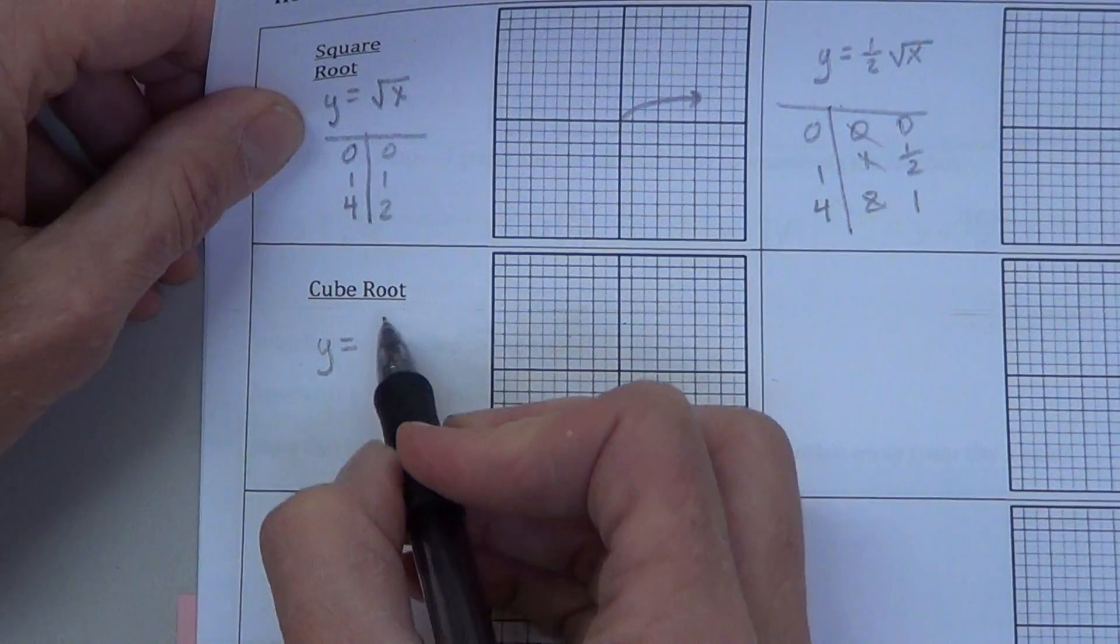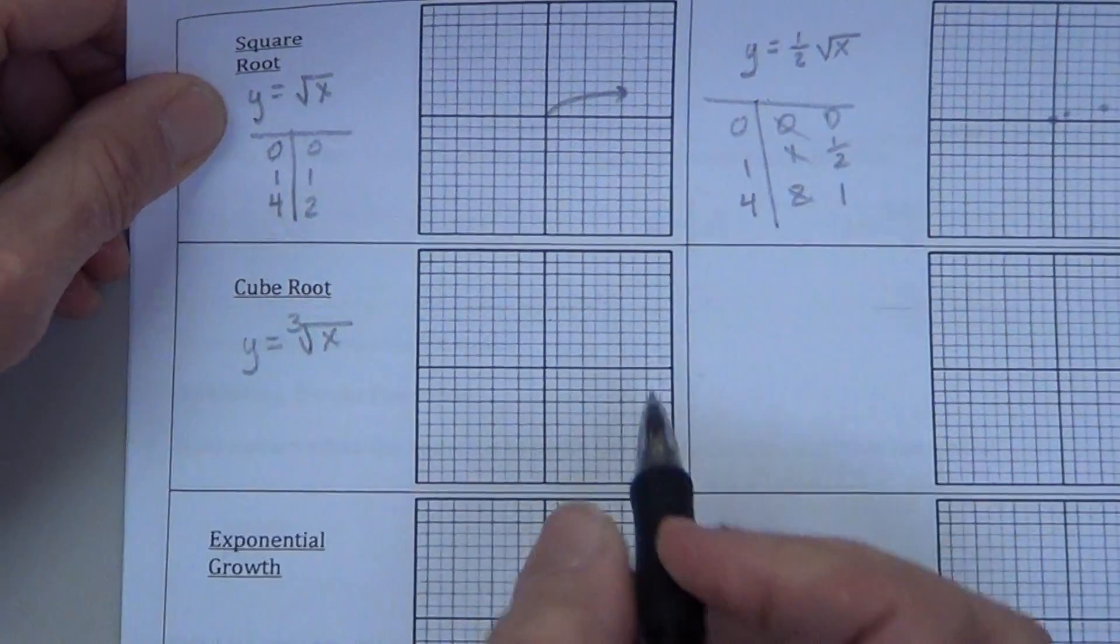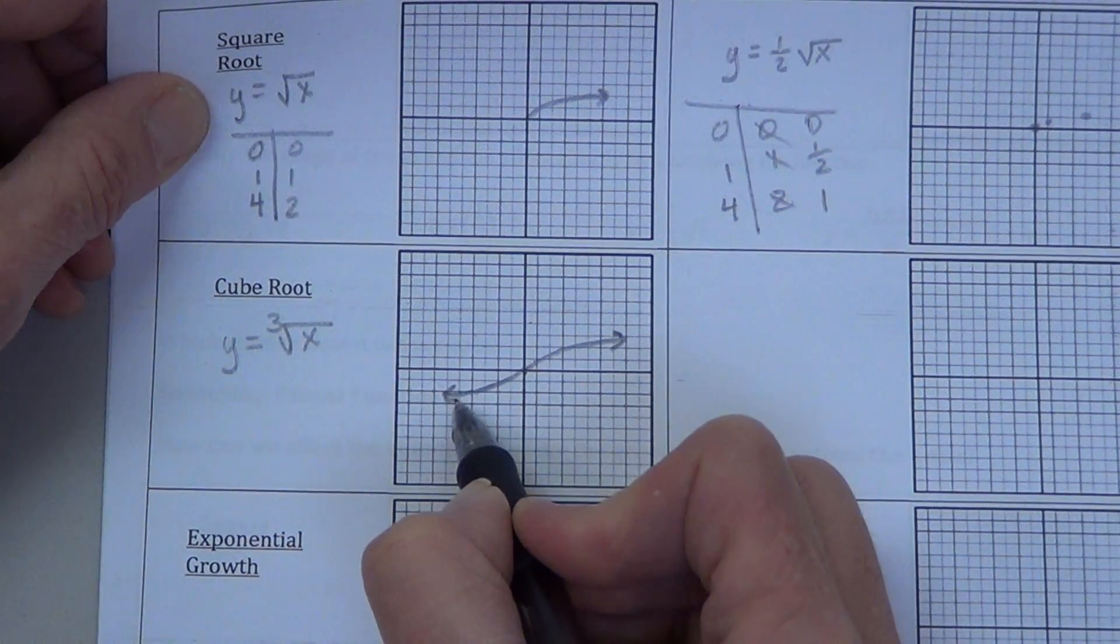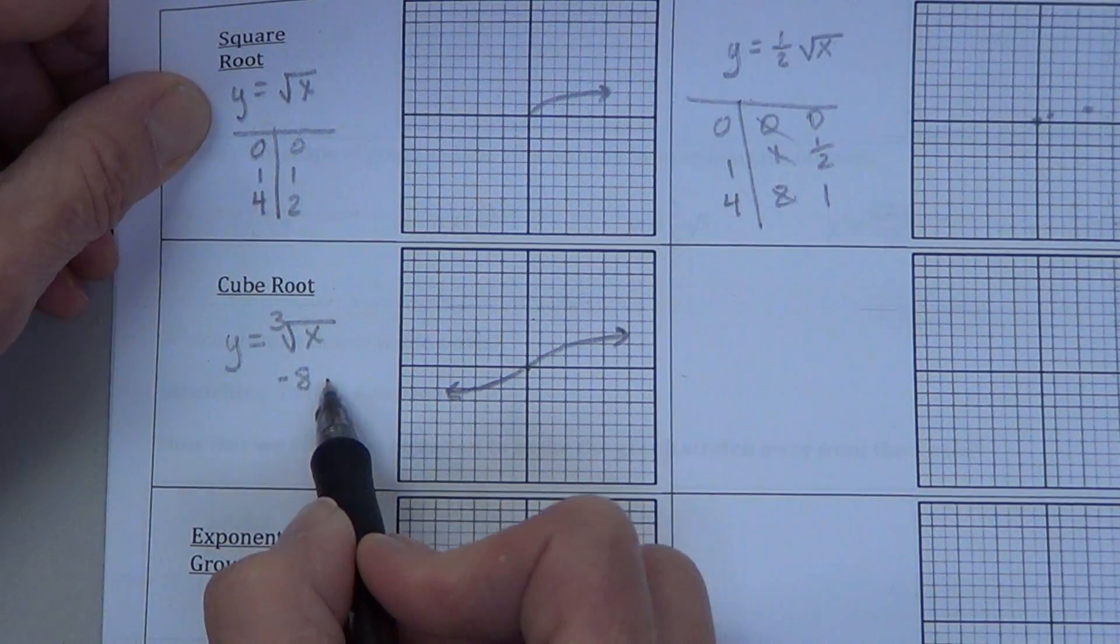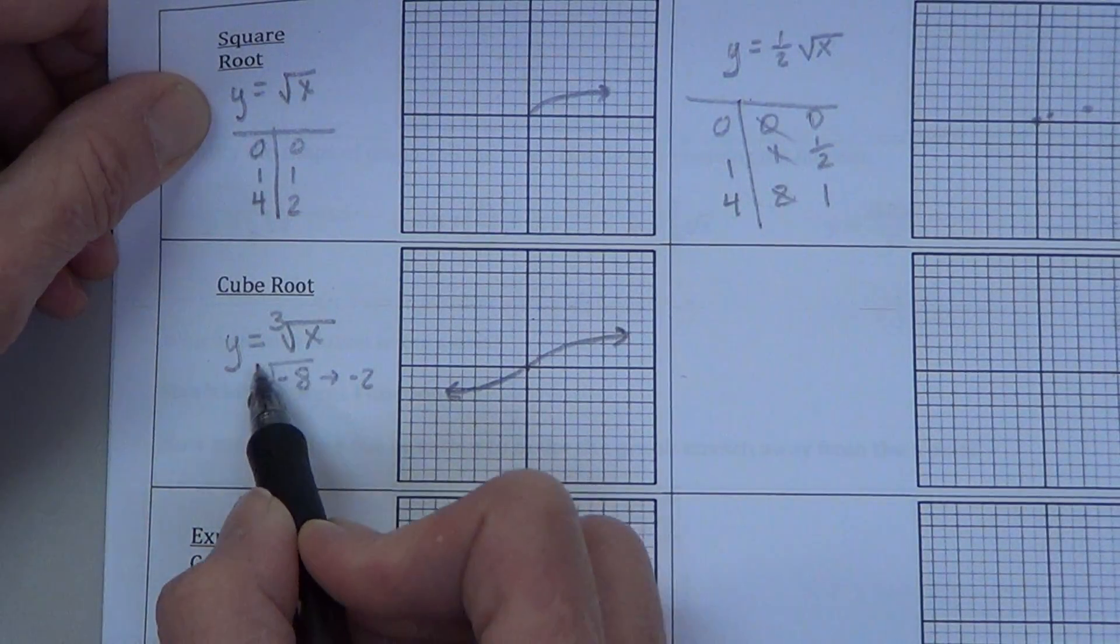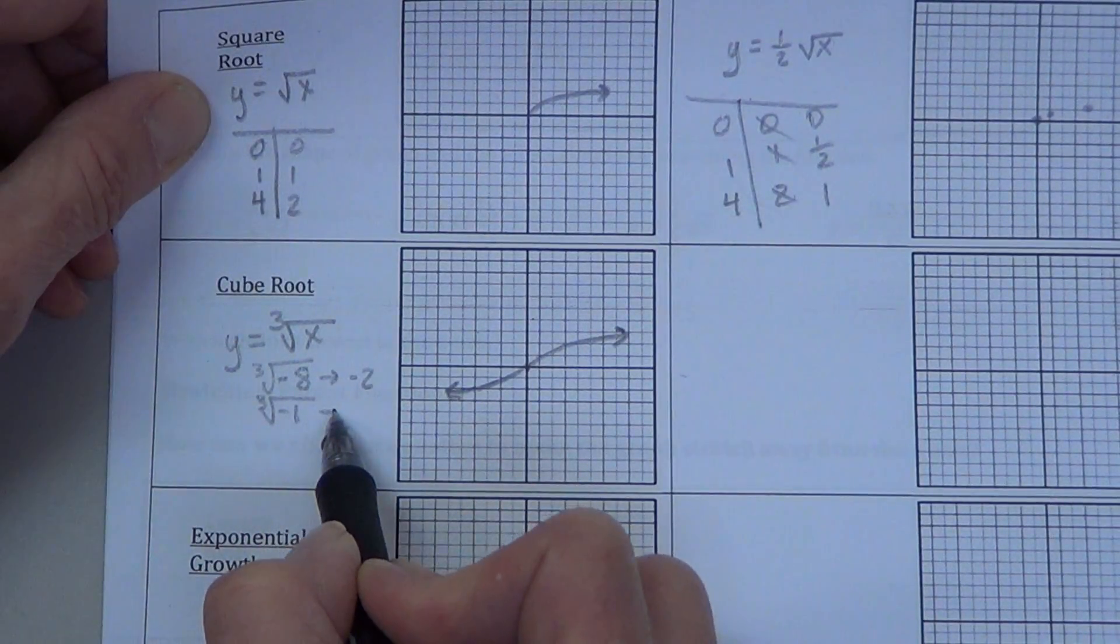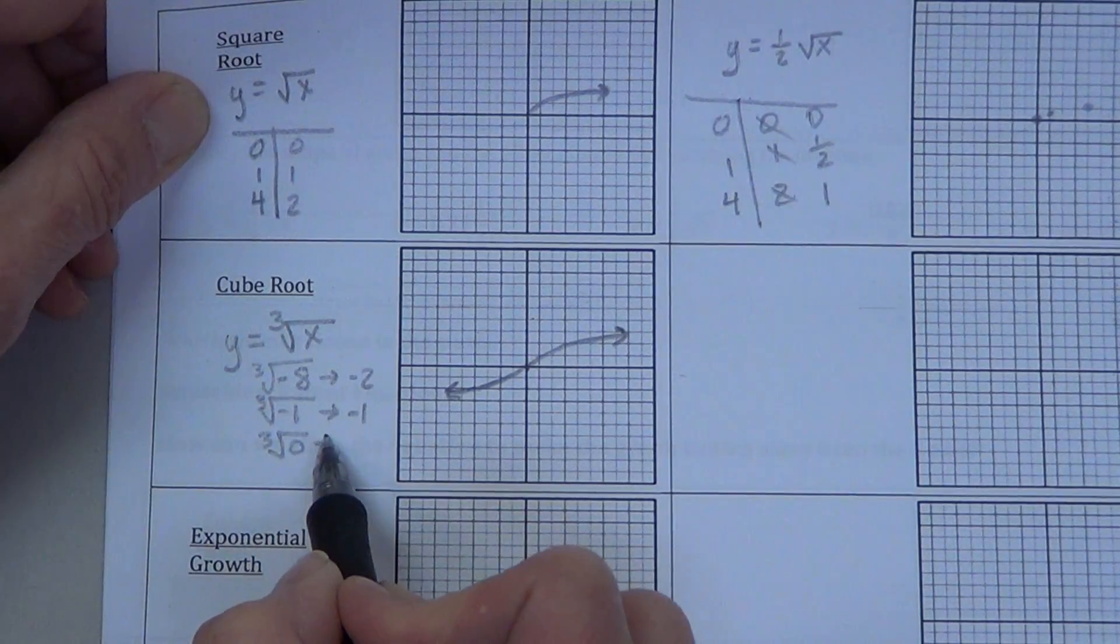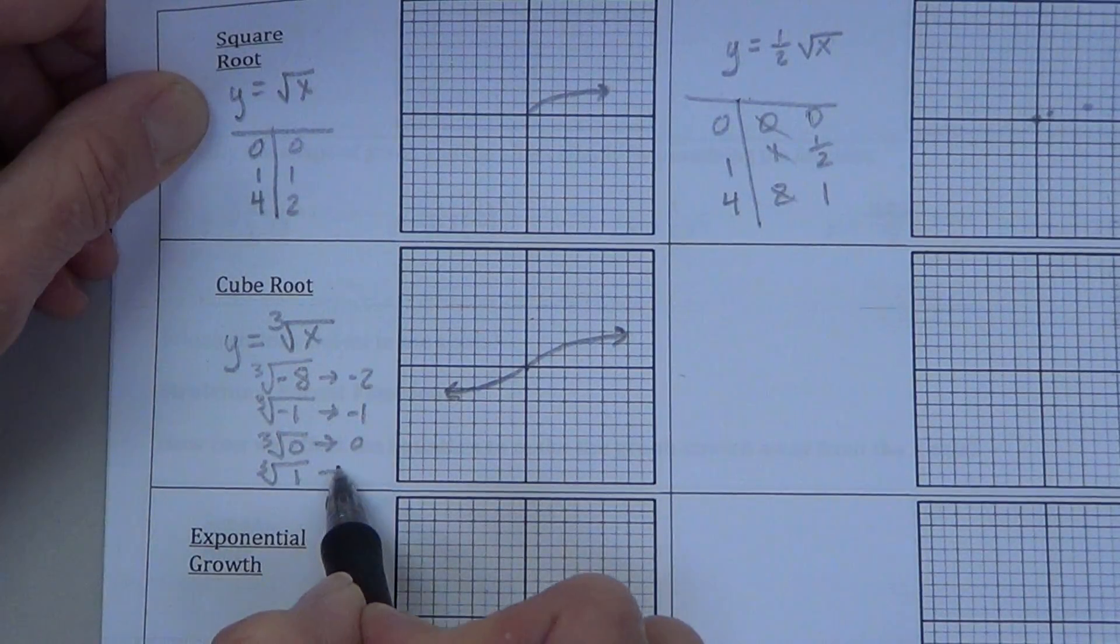So we have y equals cube root of x. Hopefully you're remembering the pattern there. It's the s shape. Key points at negative 8. Cube root of negative 8 was negative 2. Cube root of negative 1 was negative 1. Cube root of 0, 0. Cube root of 1, 1.